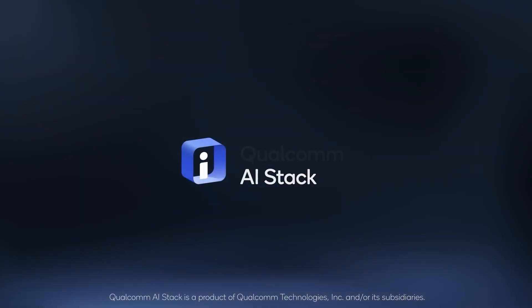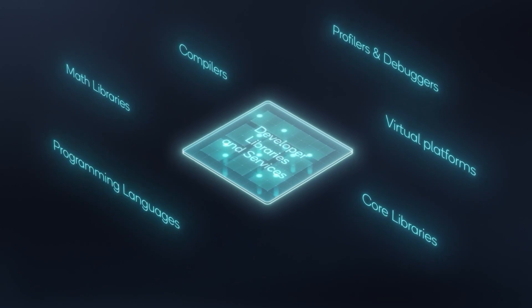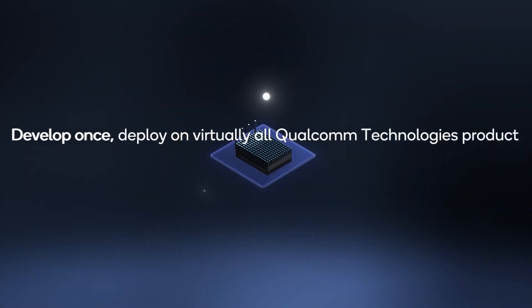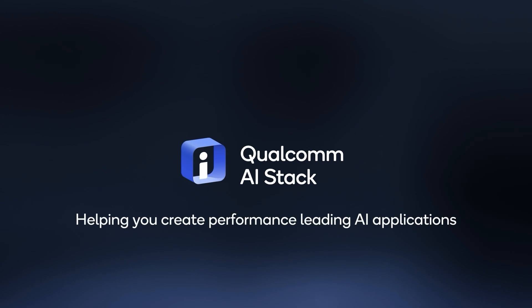Qualcomm AI stack was created with three foundational pillars in mind. First, develop once, deploy everywhere — we support popular operating systems across mobile, IoT, compute, XR, and other platforms. Second, optimize for performance and power efficiency by leveraging advanced quantization techniques and compression techniques for trained neural network models. Third, multiple levels of access — customers can pick and choose which APIs they want to use when deploying, running, and executing their models on Snapdragon devices.